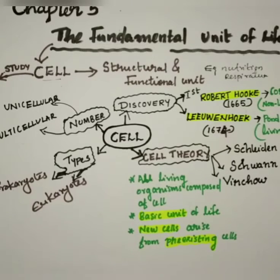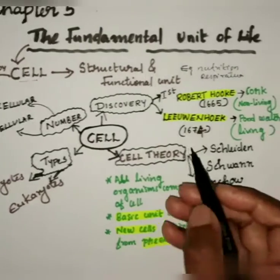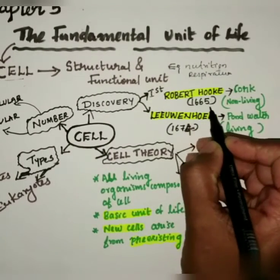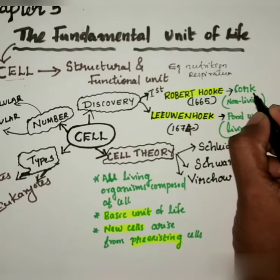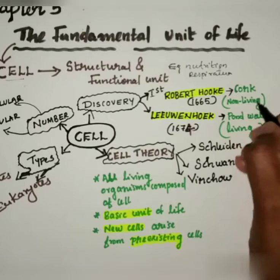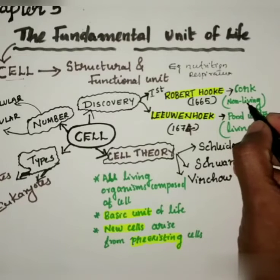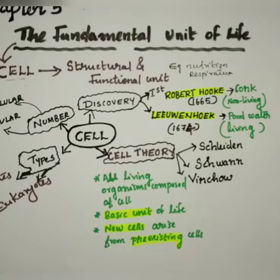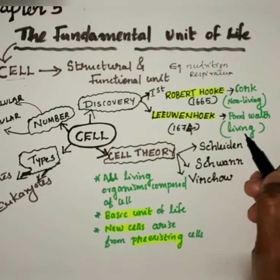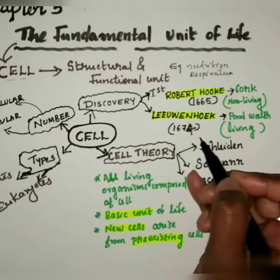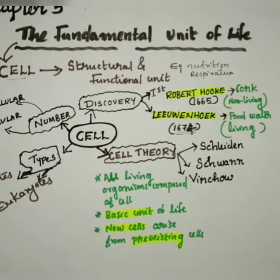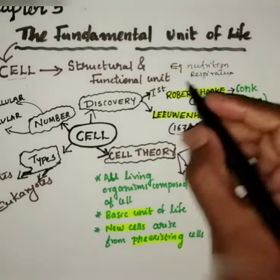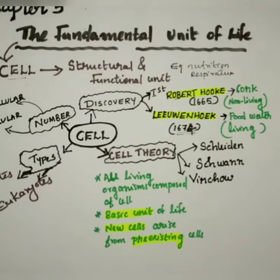We will be discussing about the discovery of the cell. The cell was first discovered by Robert Hooke in the year 1665. He observed cells in cork, which is the bark of a tree, with the help of a primitive microscope. We can observe cells only through a microscope. Leeuwenhoek discovered the living cell from pond water in the year 1674. So who discovered the cell? Robert Hooke. But who discovered the living cell? Leeuwenhoek.